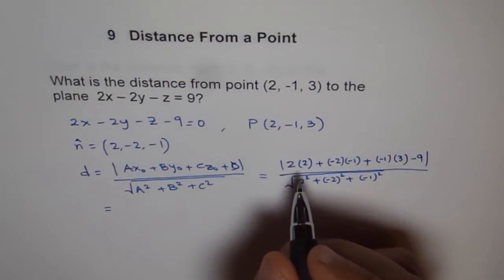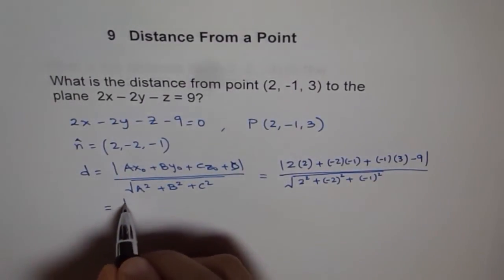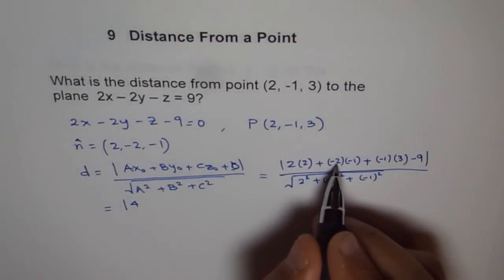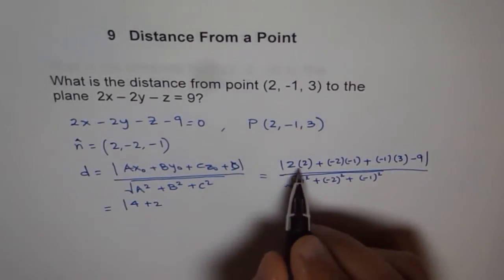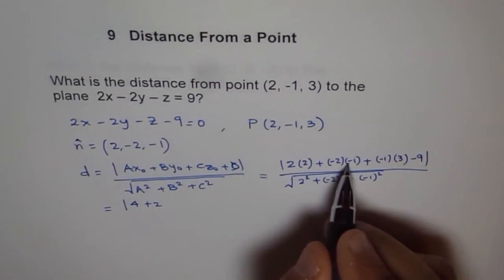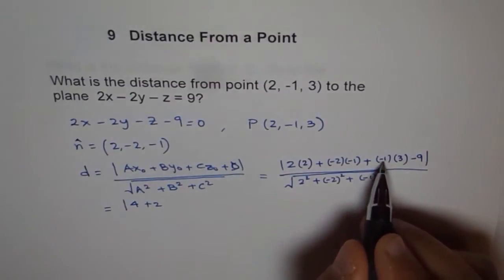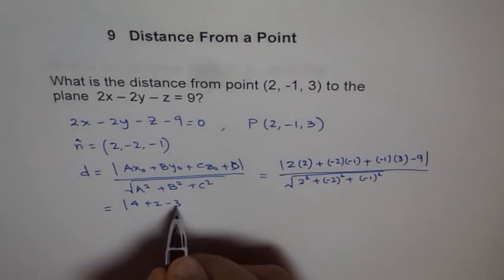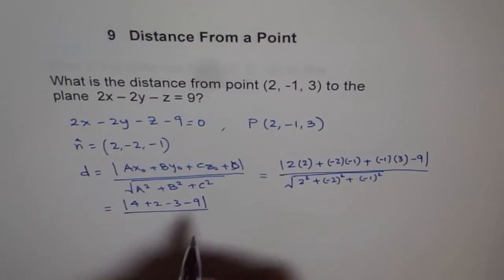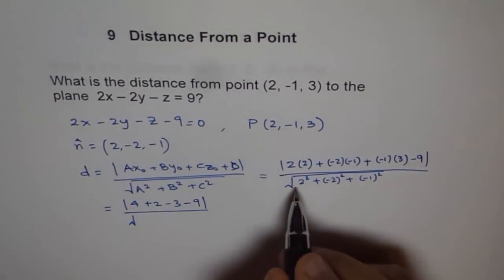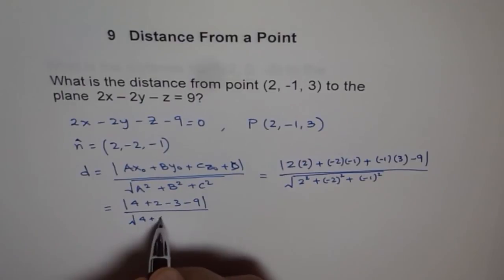We get 2 times 2 plus 2, and this is -3 and -9, over square root of 4 + 4 + 1.